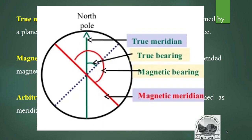In this figure, the red line represents the magnetic meridian. This magnetic bar is suspended — the north of the magnetic bar points to magnetic north, and the south of the magnetic bar points toward the south pole. The angle made using the true meridian is called true bearing, and the angle made with the magnetic meridian is called magnetic bearing.